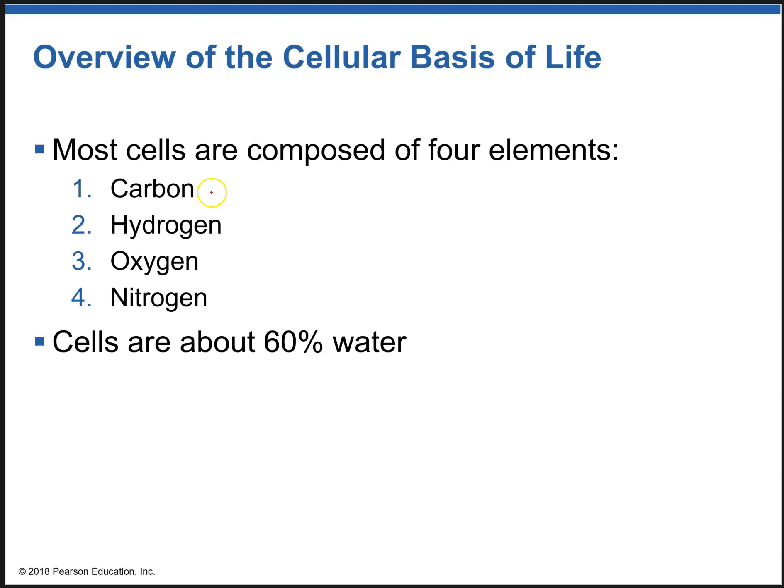If you want to look at the major elements that make up the cell, you have carbon, hydrogen, oxygen, and nitrogen, which make up most of the cell. Depending on whether they are plants or animals, you might have more or less trace elements like iron, phosphorus, and sulfur. In animal cells, cells are majorly composed of carbon, hydrogen, oxygen, and nitrogen. All cells consist of about 60 to 80 percent water.